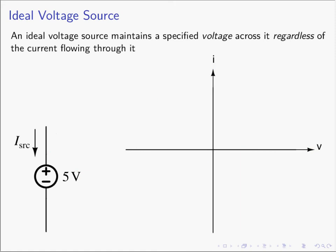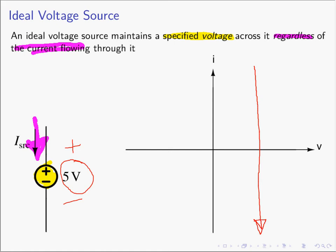So let's talk about the ideal voltage source. The circuit symbol for an ideal voltage source is on the left-hand side. A voltage source is a circuit element which maintains a specified voltage across it, regardless of the current that flows through it. So no matter how much current flows through this voltage source, it's going to maintain its voltage. In this particular example, it is a 5-volt source. The IV characteristic for our voltage source is going to be a vertical straight line, in this case at the 5-volt point.